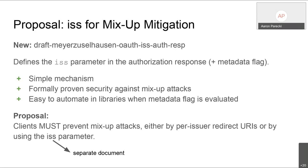Aaron: If a client is only ever interacting with one authorization server, none of this mix-up mitigation is necessary — is that correct? And if so, can that be explicitly stated? Daniel: Yes, that's correct, and we'll check whether it's already in the text or add it explicitly.